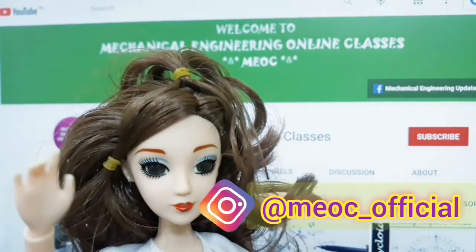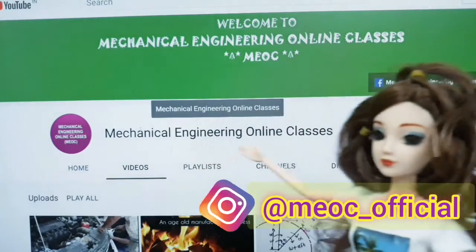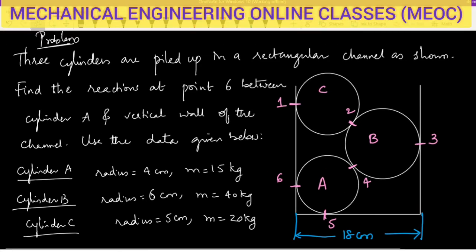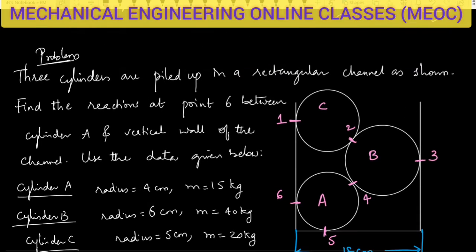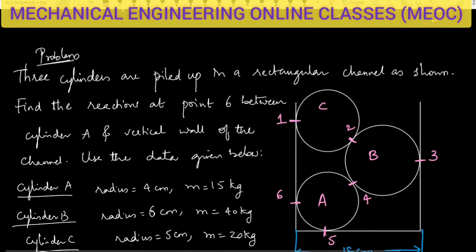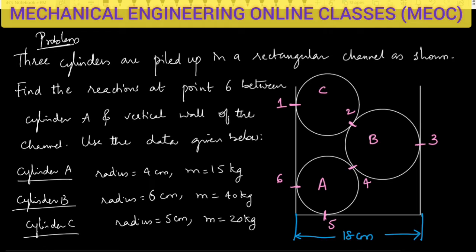Hello friends, welcome to Mechanical Engineering online classes. Here is a question: three cylinders are piled up in a rectangular channel as shown. We need to find the reaction at point 6, that is between cylinder A and the vertical wall of the channel.